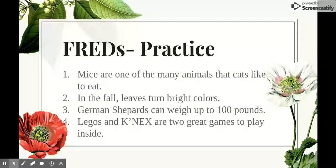Here's a bit more practice. Number one: mice are one of the many animals that cats like to eat. This is an example. Maybe you've seen a cat eat a mouse, or you've read about it or heard about it. Number two: in the fall, leaves turn bright colors. This is a fact. It's information we know is true and we can prove.